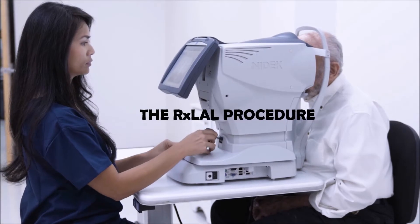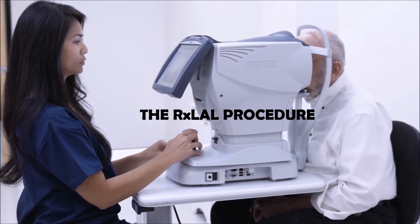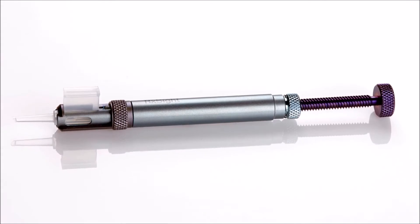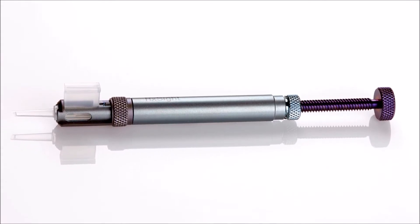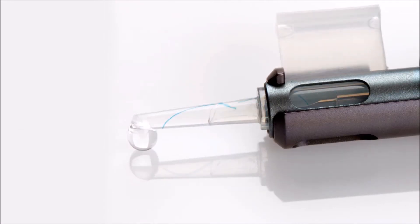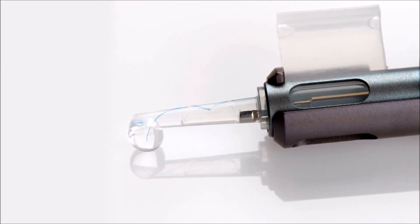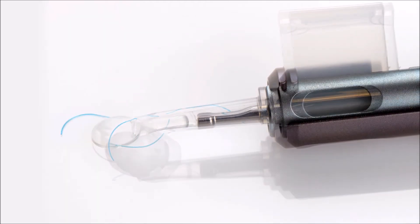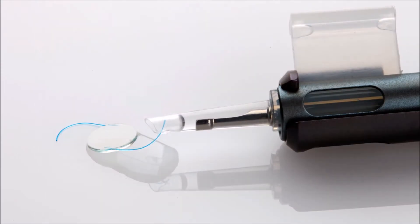Prior to surgery, routine preoperative measurements for monofocal base power selection are performed. The RxLAL is implanted with a proprietary injector through a small, clear corneal incision into the capsular bag using standard surgical techniques for a 3-piece silicone IOL. There is no additional time added to the cataract removal or IOL implantation procedure.